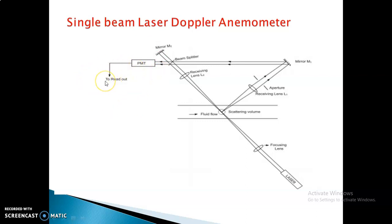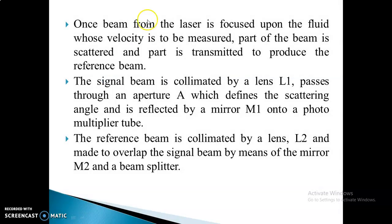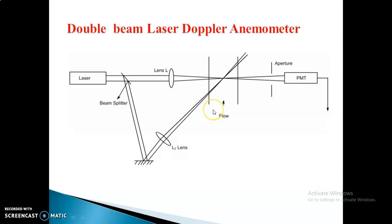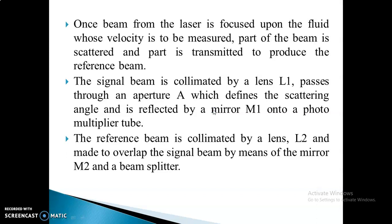Having both the reference and the scattered signal allows us to calculate the frequency shift. The scattered signal is received through the PMT and we can read out the output value. One beam from the laser is focused upon the fluid whose velocity is to be measured. Part of the beam is scattered and transmitted to produce the reference. The signal beam is collimated by lens L1, passed through aperture A which defines the scattering angle, and reflected by mirror M1. The reference is collimated by lens L2 and made to overlap by means of mirror M2 and a beam splitter.